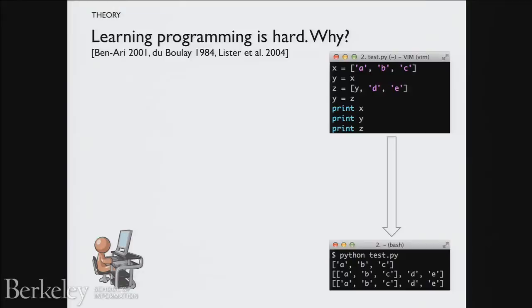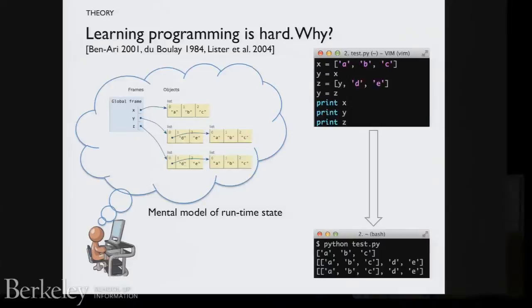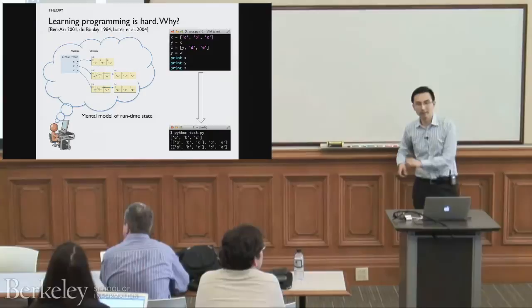A central challenge all novices face, regardless of language, is that they have to build a mental model of what happens when the code is running. They stare at the code and output and must form a mental model. For example, looking at code with three global variables X, Y, and Z pointing to five different lists — a novice might think they understand it, but this can turn out to be a completely faulty mental model of what happens in Python.